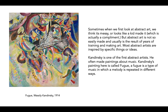Vasily Kandinsky is one of the first abstract artists. He often made paintings about music. Kandinsky's painting here is called Fugue. A fugue is a type of music in which a melody is repeated in different ways. What do you see repeated here in the painting by Kandinsky? Can you see music in this painting?